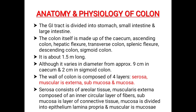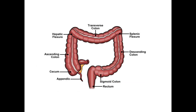Anatomy and physiology of colon. The GI tract is divided into stomach, small intestine and large intestine. The colon itself is made up of caecum, ascending colon, hepatic flexure, transverse colon, splenic flexure, descending colon and sigmoid colon. It is about 1.5 m long, varying in diameter from approximately 9 cm in caecum to 2 cm in sigmoid colon. The wall of the colon is composed of 4 layers: serosa, muscularis externa, submucosa and mucosa. Serosa consists of areolar tissue. Muscularis externa is composed of an inner circular layer of fibers. Submucosa is a layer of connective tissue. Mucosa is divided into epithelium, lamina propria, and muscularis mucosa. Here is the diagrammatic representation of the anatomy of the colon.